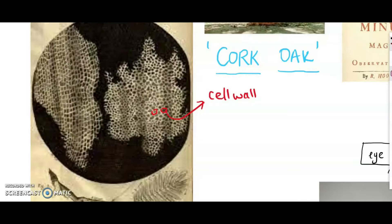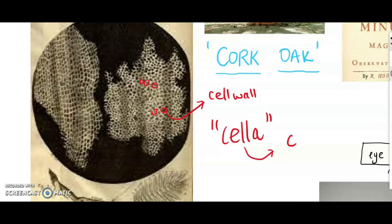As he observed the cork tissue, he saw this regular array of square or rectangular cells. These square and rectangular cells resembled rooms where monks lived in a monastery to Hooke. In Latin, these small rooms are called 'cellae,' and so Hooke coined the term 'cell,' which in Latin means a small room. That is how we get the word cell, and Hooke is credited for coining the term.